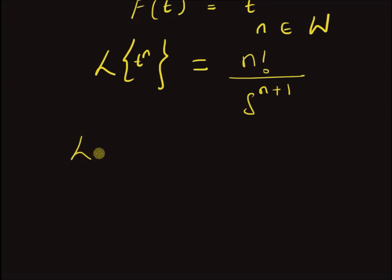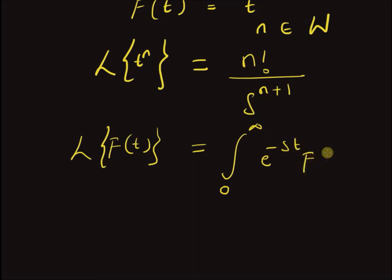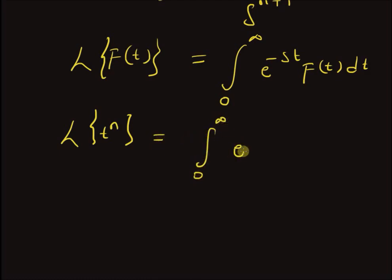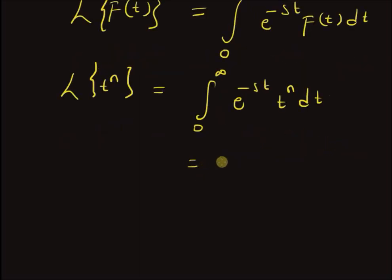By definition, the Laplace transform of a function f(t) is given by the integral from 0 to infinity of e^(-st) f(t) dt. Since in this example f(t) = t^n, the Laplace transform of t^n equals the integral from 0 to infinity of e^(-st) t^n dt. By looking up a table of definite integrals, we can see this integral equals n factorial over s^(n+1).